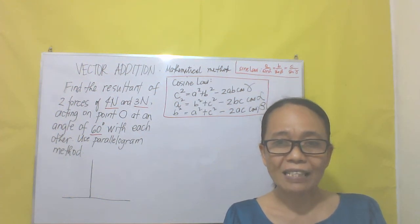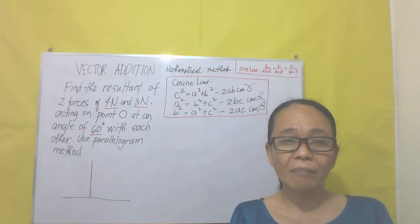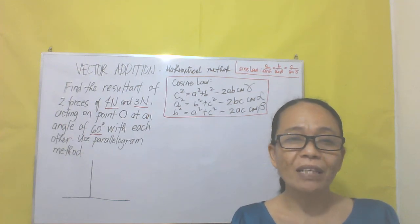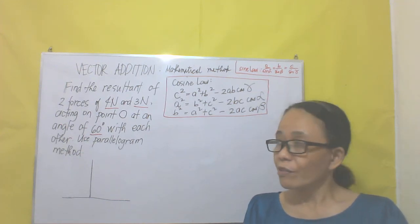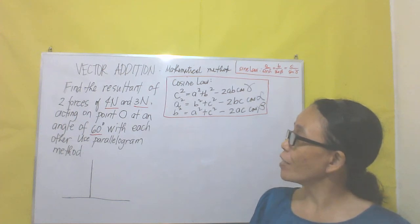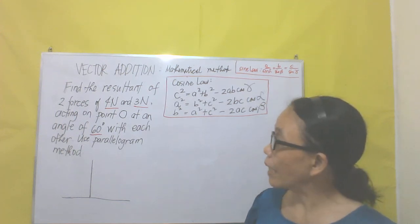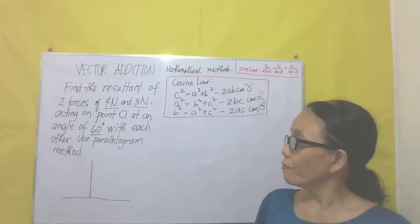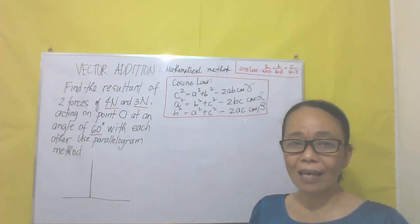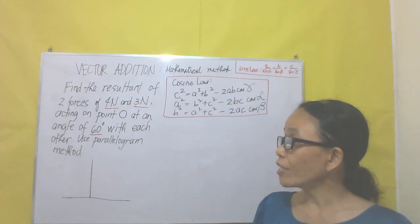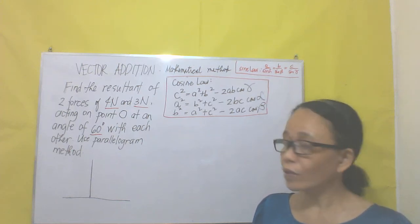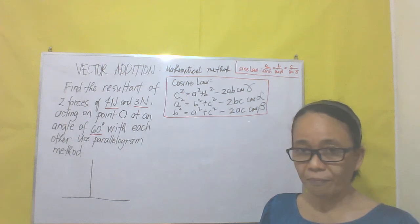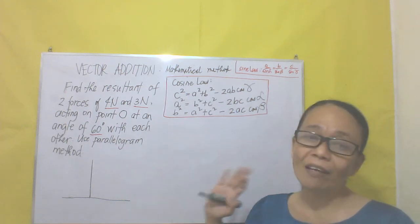Good morning. So this time, another problem on the mathematical way of solving the resultant vector r. Suppose we have this problem: find the resultant of two forces, 4N and 3N, acting on point O at an angle of 60 degrees with each other. Use the parallelogram method.